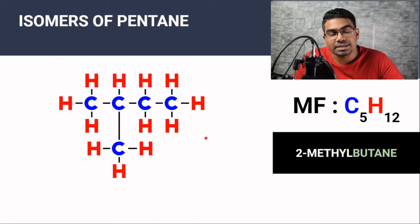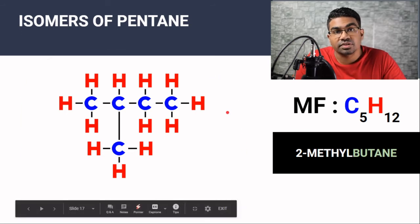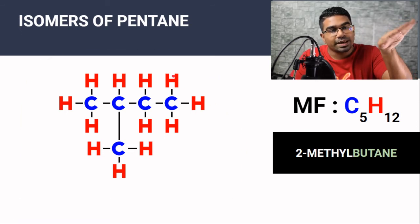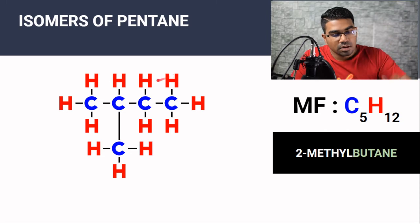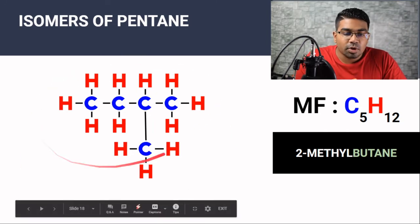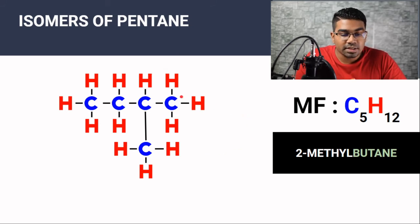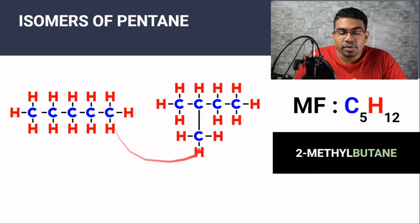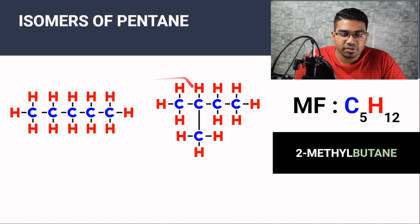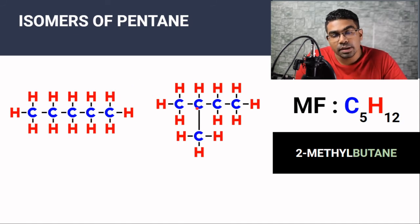It is important to realize that these are three-dimensional structures and therefore they can be rotated in space, so this molecule and this molecule are exactly the same molecule — this will still be 2-methylbutane, because when we number the carbons, this will still be carbon two. When we compare 2-methylbutane to pentane, they have different structural formulas but exactly the same number of carbon and hydrogen atoms, and therefore they are isomers.